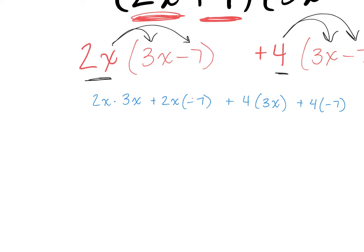2x times 3x — who knows what that is? Maya? 6x, but we're missing something. Roy? 6x to the second power — because these x's multiplied together give us x squared. 2x times negative 7, Alan? Negative 14x. And 4 times 3x, Nicole? 12x. And my last one, 4 times negative 7? Minus 28. Now we're almost done — why are we not done?